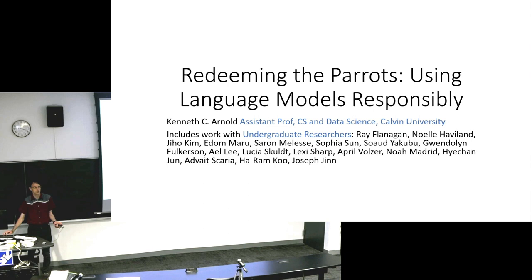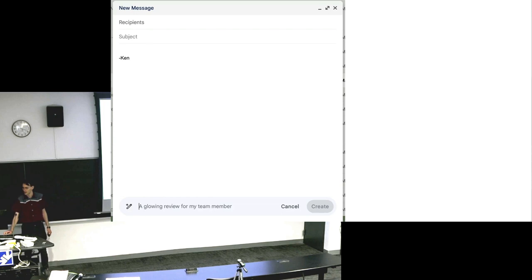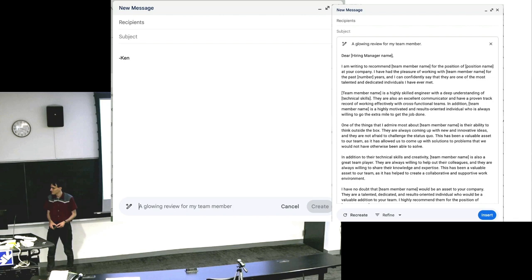So I want to discuss the idea of could we use language models responsibly? Or as we'll see, can we redeem the stochastic parrots? So I opened up my Gmail this couple months ago and it offered this new feature being able to write any kind of email you want, just describe what you want and click the create button, and it out pops, well, here's a glowing review for my team member.